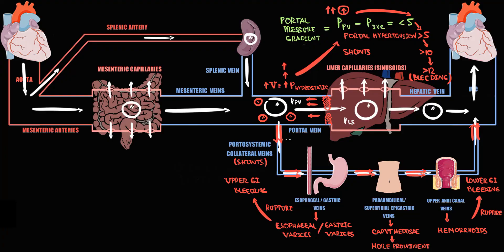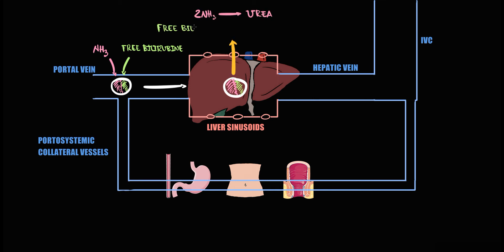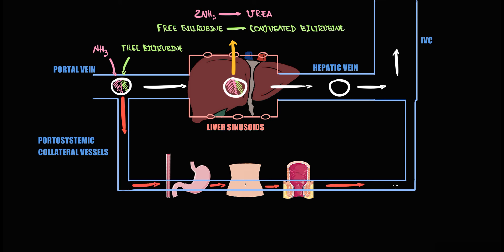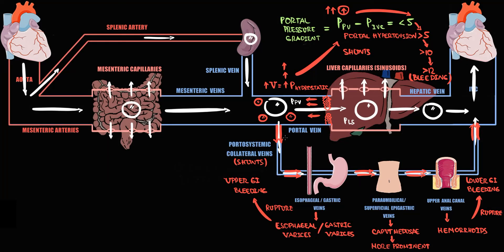Flow that bypasses the liver is non-physiologic. In blood we have dangerous substances such as free ammonia and unconjugated bilirubin, and the organ that provides their detoxification is the liver. In normal conditions, the portal vein delivers blood to the liver, where dangerous ammonia is converted to urea — a less harmful substance — and liver provides conjugation of bilirubin. But blood that flows into the shunts bypasses the liver and does not undergo detoxification. As a result, blood ammonia levels increase, which can cause hepatic encephalopathy, and free bilirubin levels increase, which manifests as jaundice.